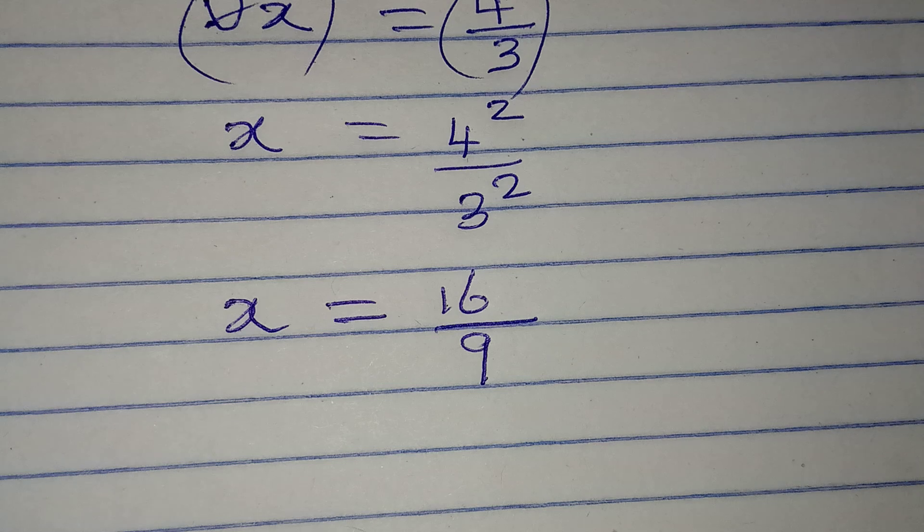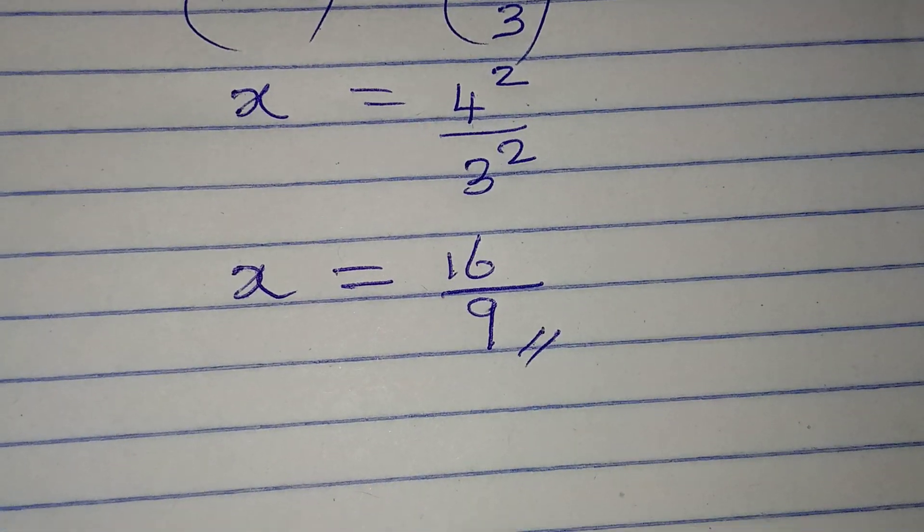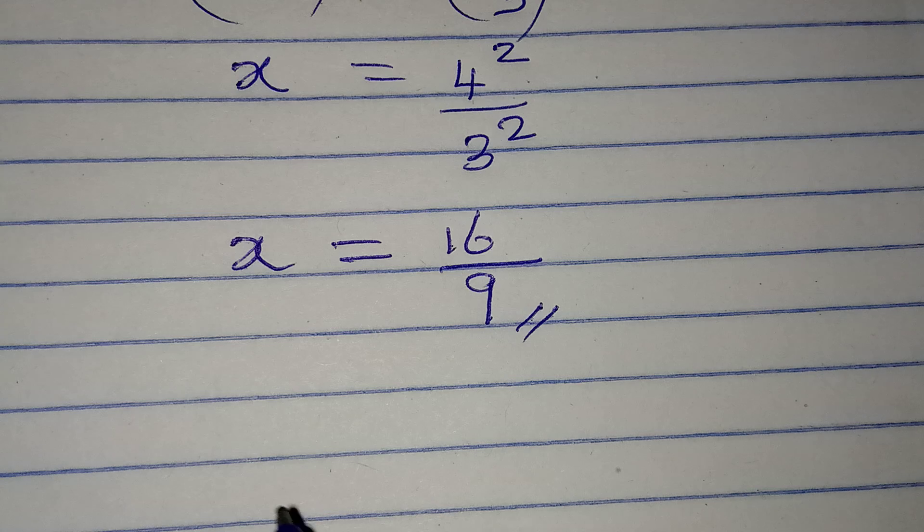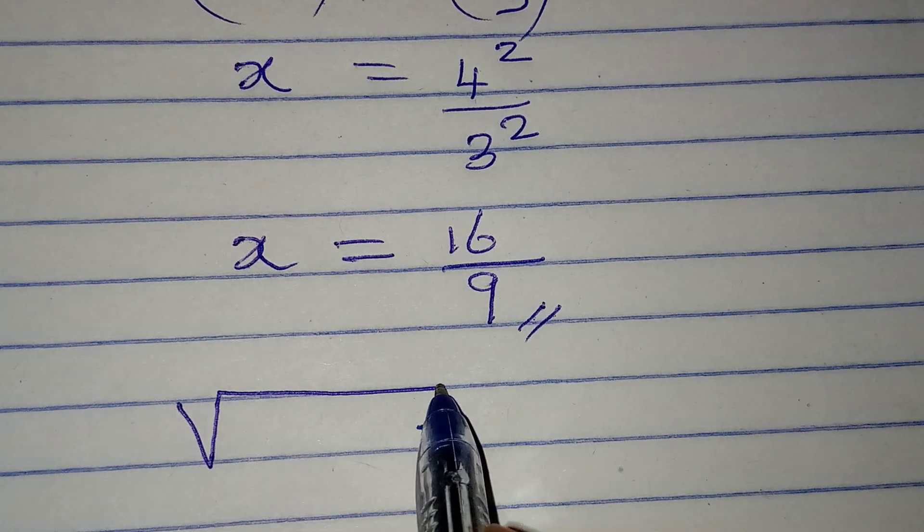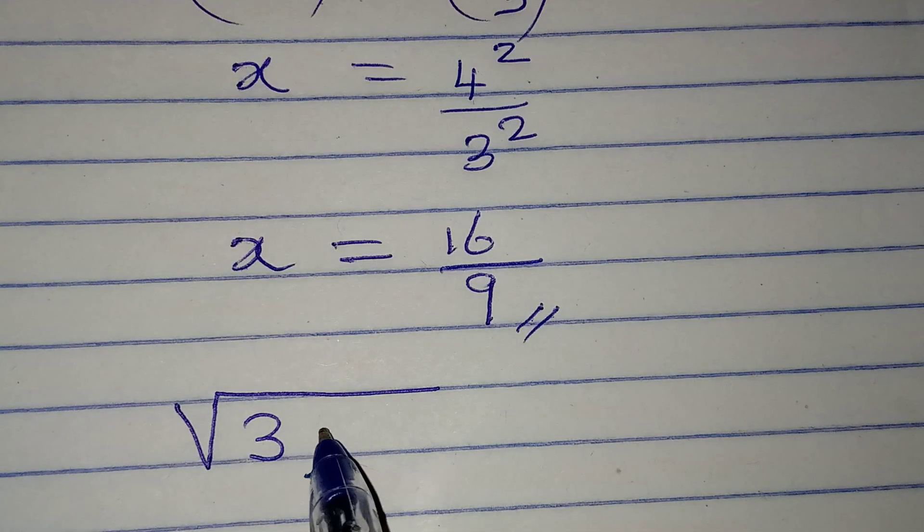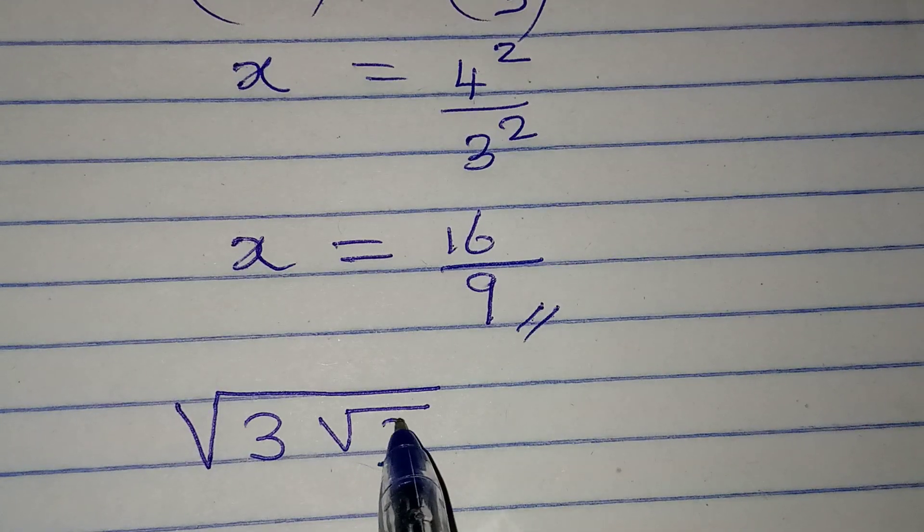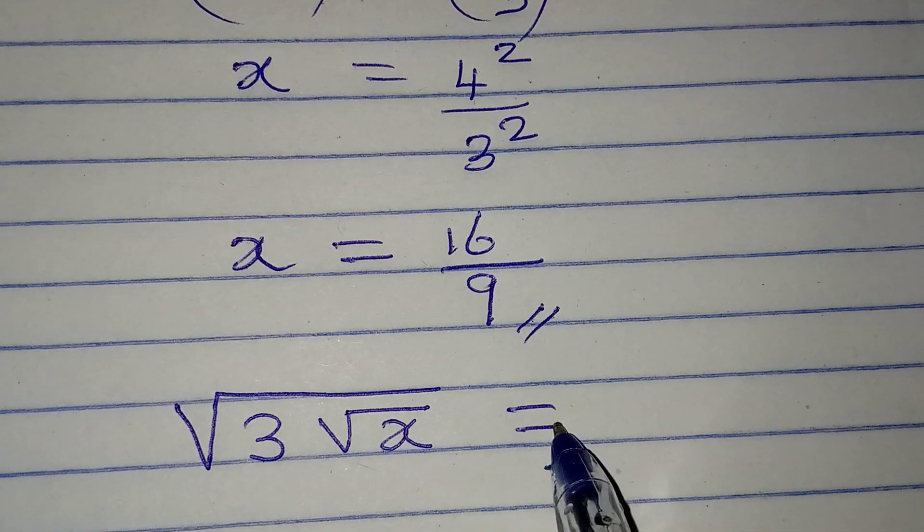So, this is the value of x that satisfies the given equation. And you might want to give it a check. Remember, this is the equation that we have. We have 3, and then we have square root of x to be equal to 2.